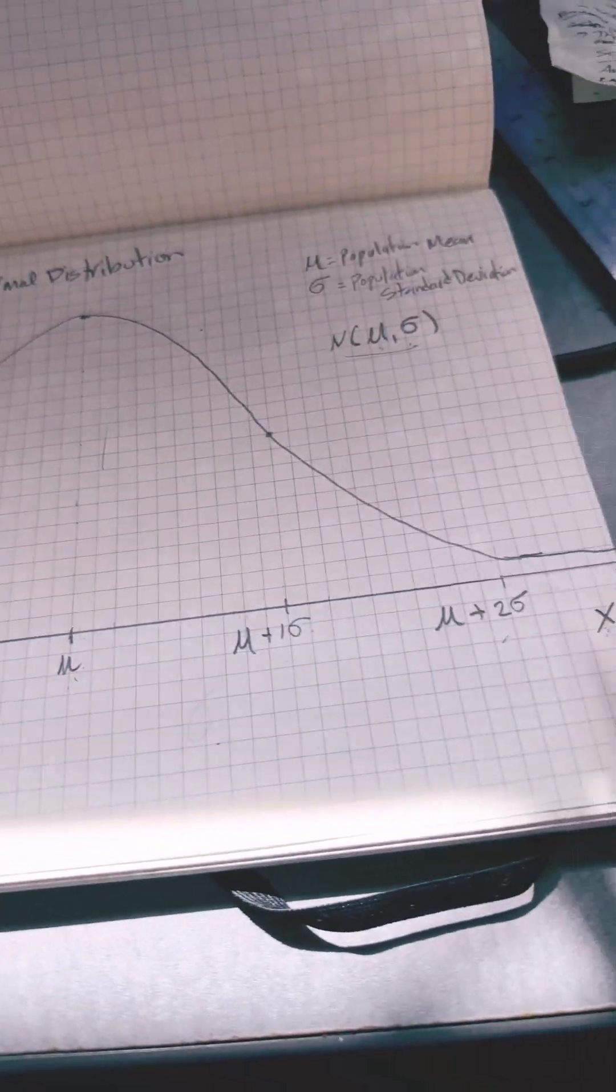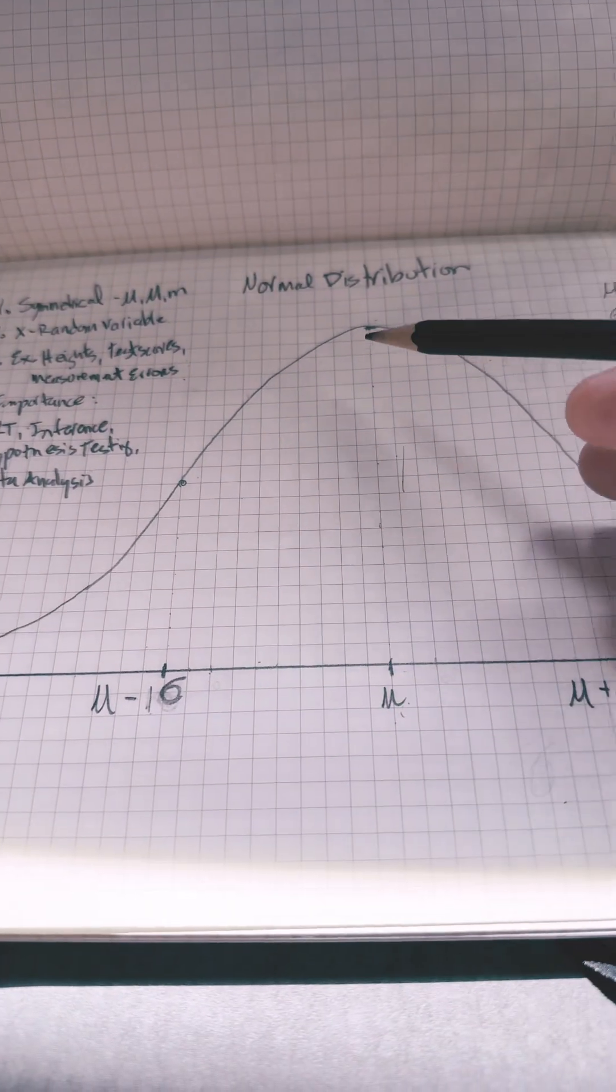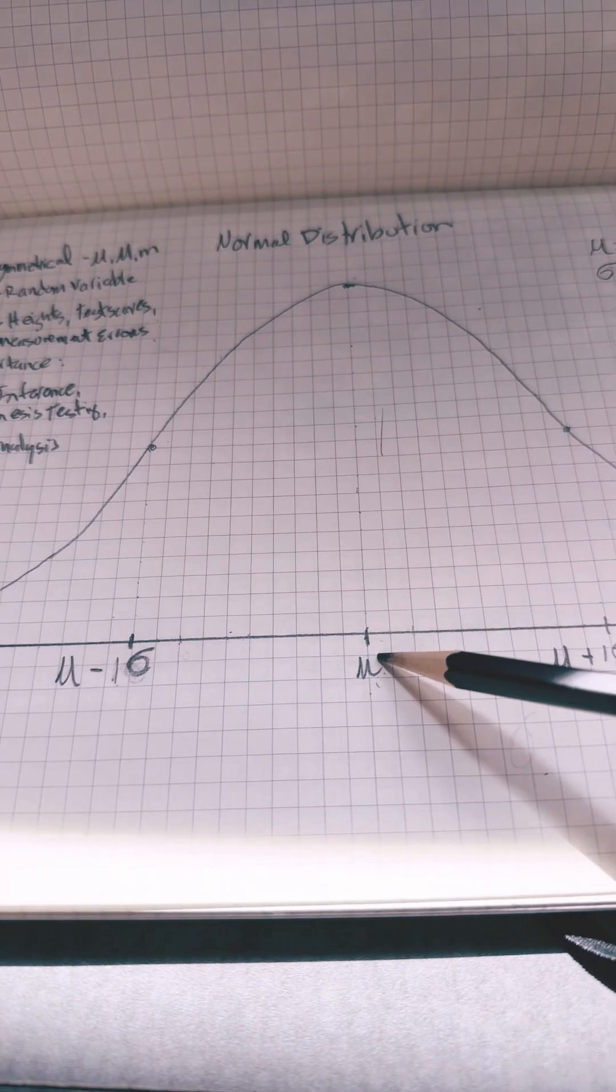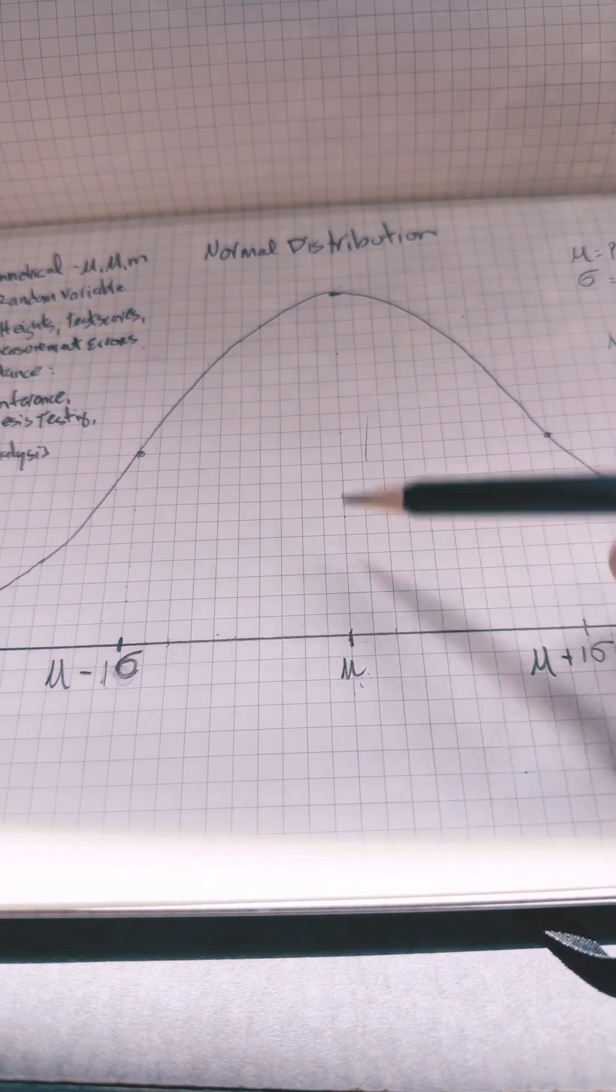This is the normal distribution. This is how it looks. It's a bell-shaped curve, and it has a population mean in the center, and also the median and the mode.